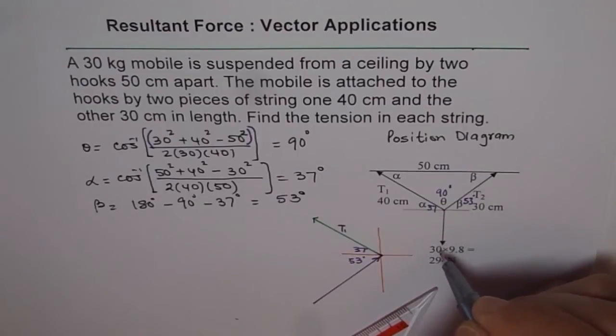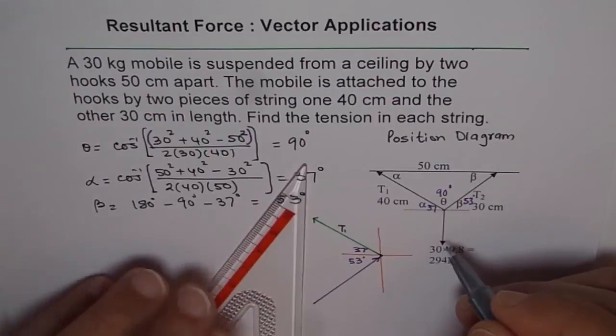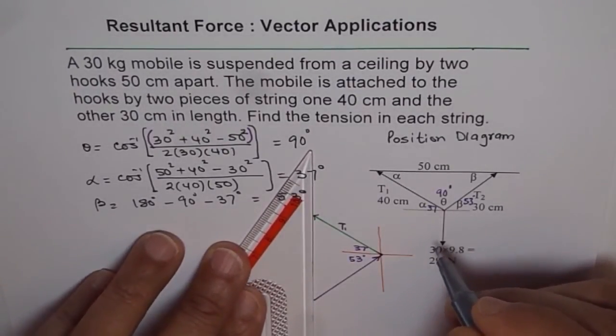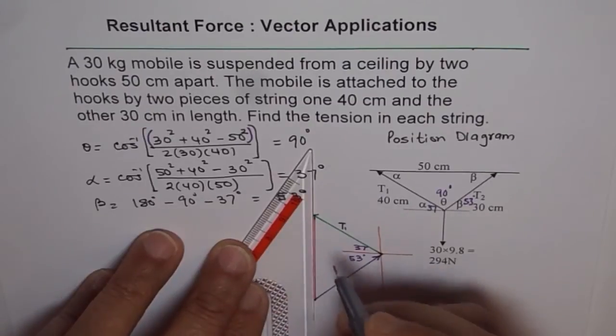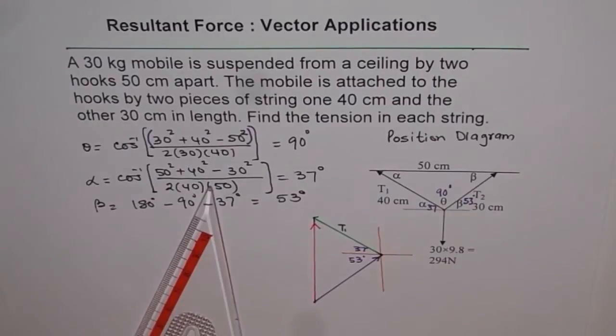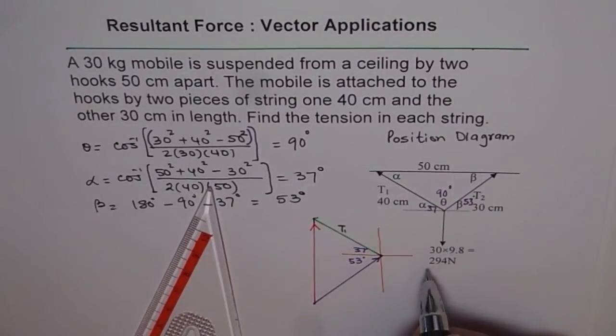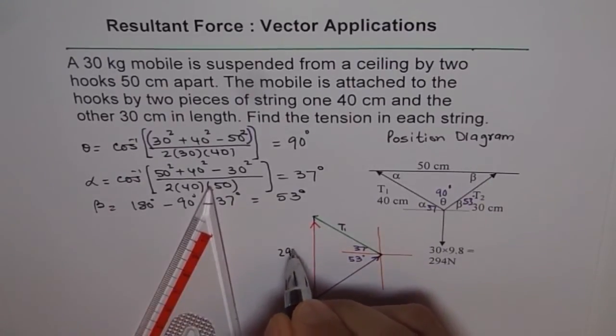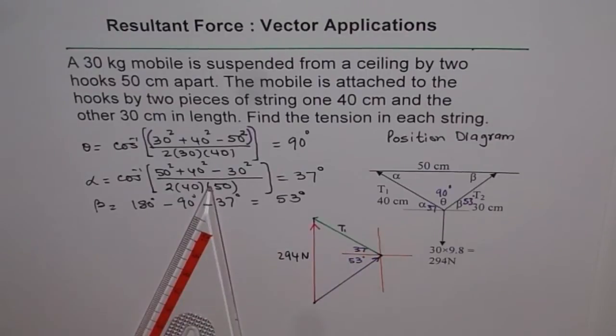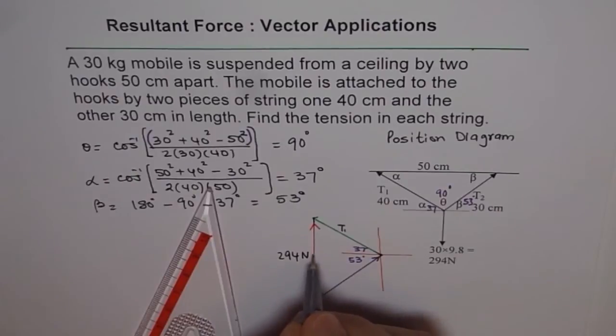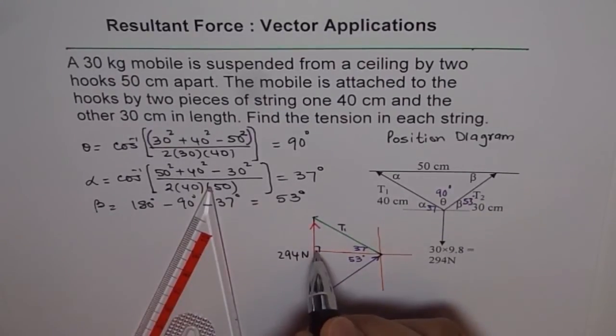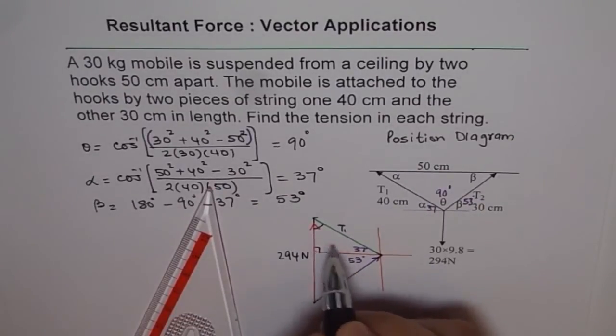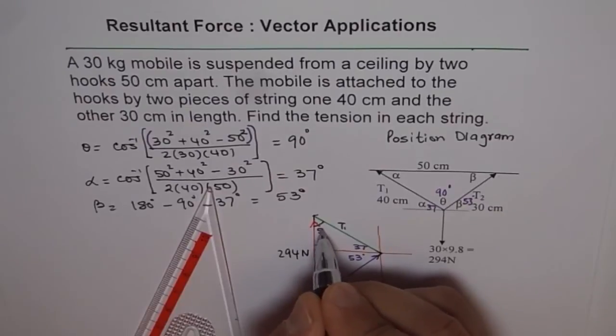This is the force which is acting downwards. And the force which will be opposite this force and equal to it will bring this system into equilibrium. Therefore my force which will bring it to equilibrium will be acting in the opposite direction. Draw that force here from this point. This force is equal to 294 Newtons. That becomes the vector diagram. This will make 90 degrees.